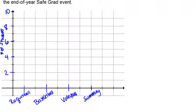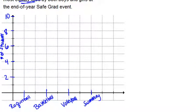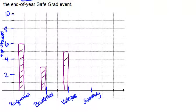For racquetball, they had six votes, so we'll have our first bar going up to 6. For basketball, there were 3 students. For volleyball, it was 5. And for swimming, it was 7.